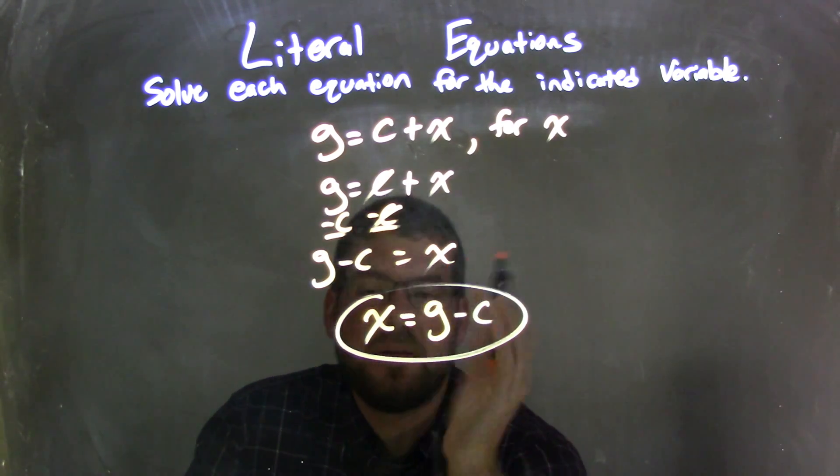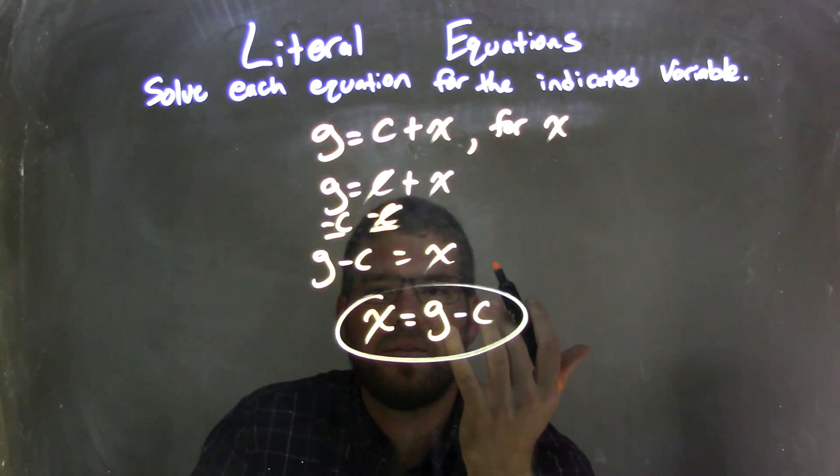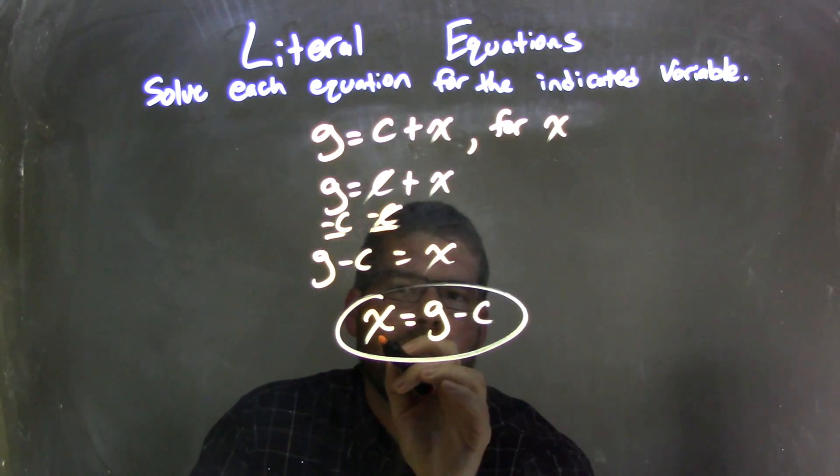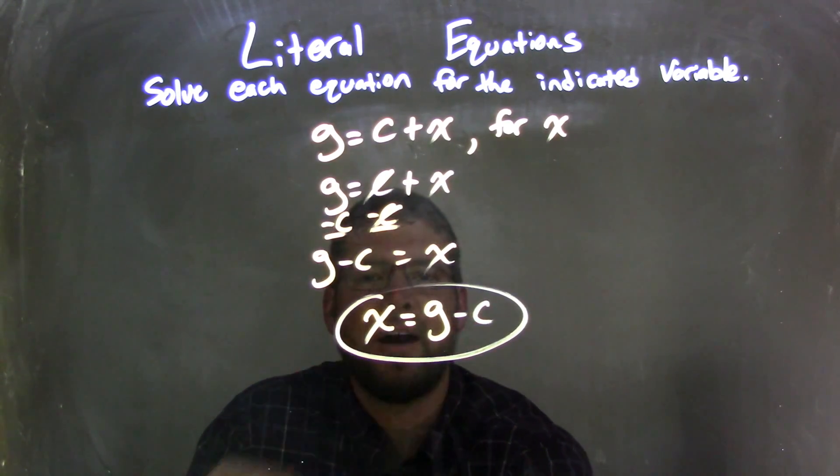From there, I basically had x isolated, so I was kind of done, right? But I'm going to rewrite this to look nice and neat, and so I have x coming first, so I have x equals g minus c, and that is my final answer.